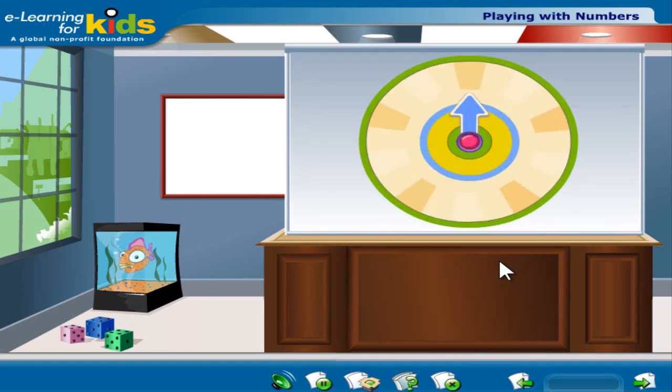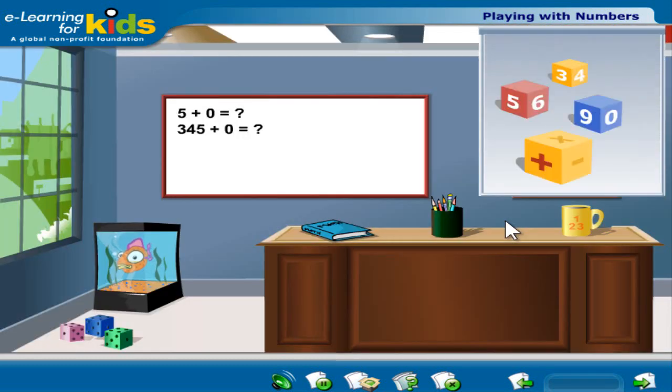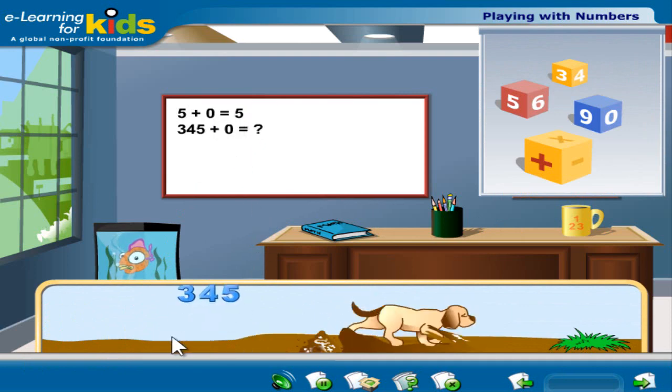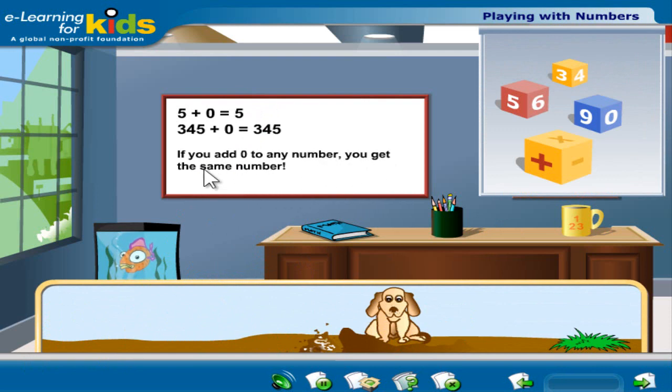Whole numbers are simply the numbers 0, 1, 2, 3, 4, 5, and so on. Do you know what happens if you add 0 to any number? If you add 0 to any number, you get the same number.